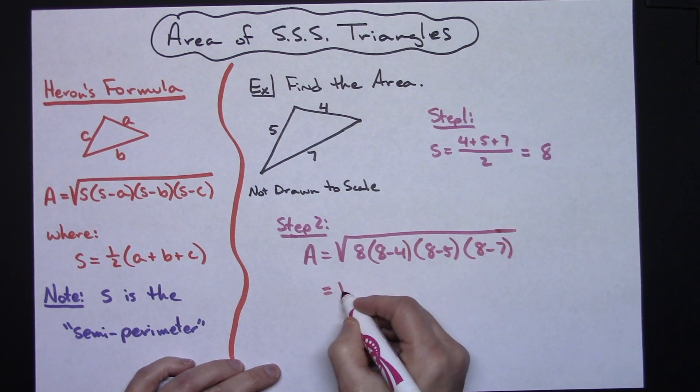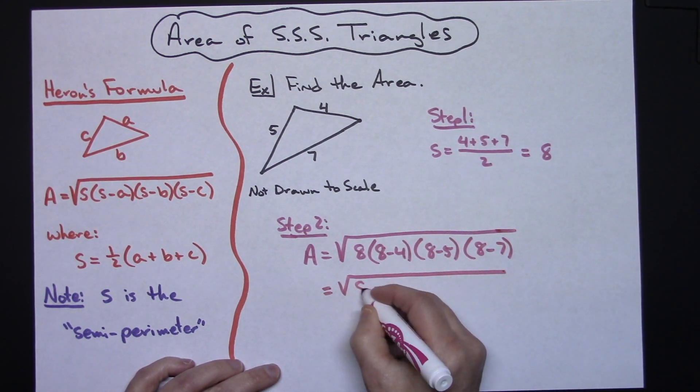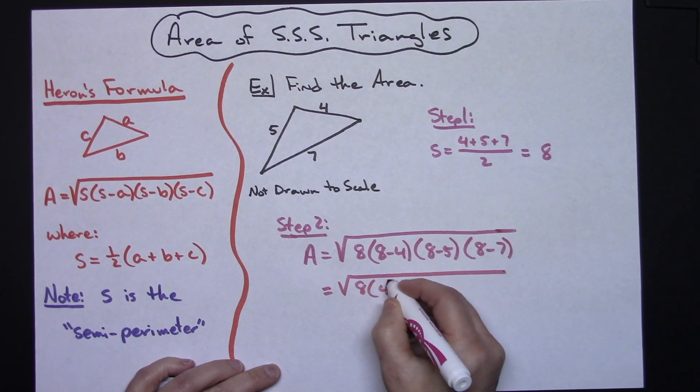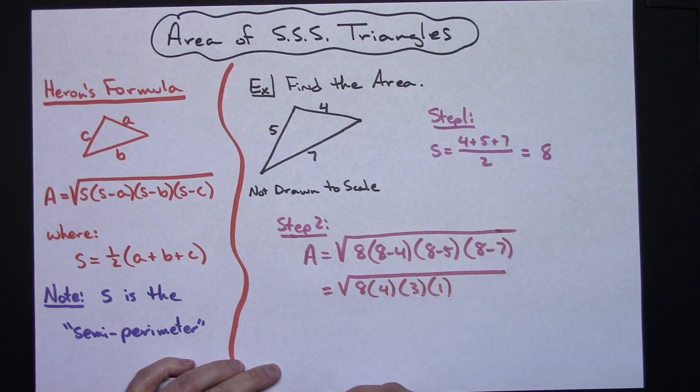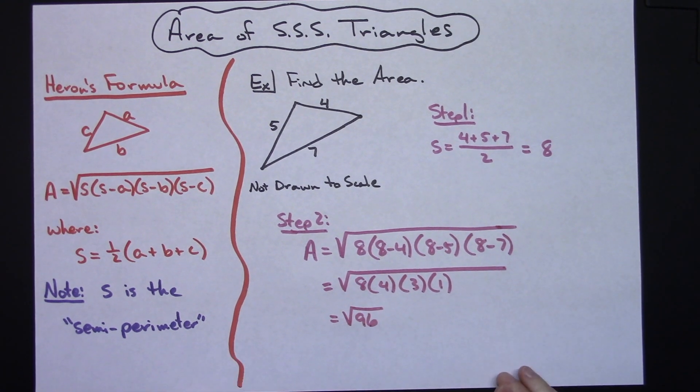At this point you could go ahead and simplify that a little bit. We're going to have an 8 times a 4 times a 3 times a 1. Multiplying all that out, probably going to use a calculator at that point, you're going to get square root of 96.